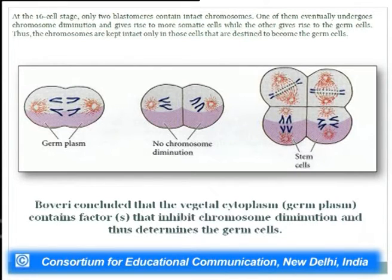Based on these experiments, Boveri concluded that the vegetal cytoplasm — the germ plasm — contains factors that inhibit chromosomal diminution and thereby determine the germ cells. This makes sense because germ cells give rise to gametes for the next generation, so chromosomal diminution is inhibited in those cells destined to become germ cells. This was strong evidence in favor of the germ plasm theory.